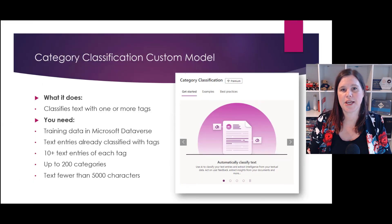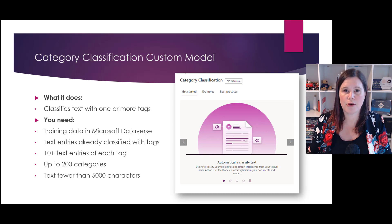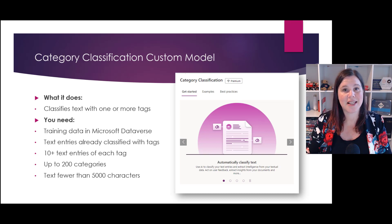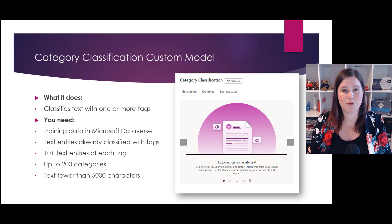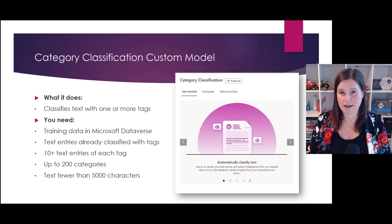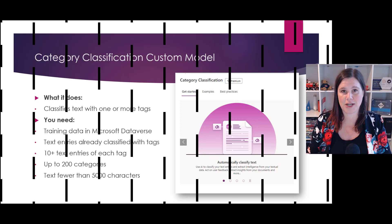The category classification custom model learns to read blocks of text — perfect for incoming reviews, incoming emails, social media posts, and that sort of thing — and classifies them according to categories that you've set up. This is much more sophisticated than just searching for keywords; it actually learns from your training data set how you want things to be categorized. One use case is routing in a customer service scenario so that incoming items go straight to the right team.